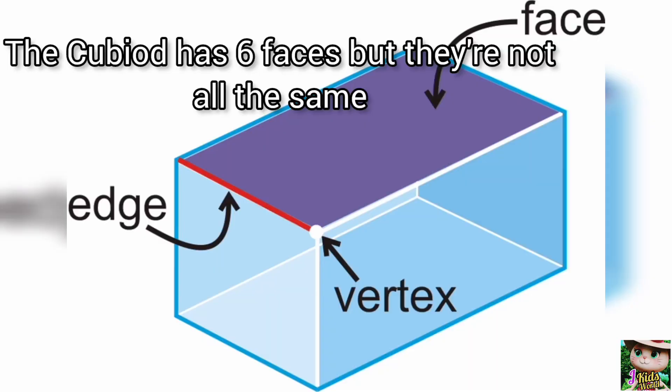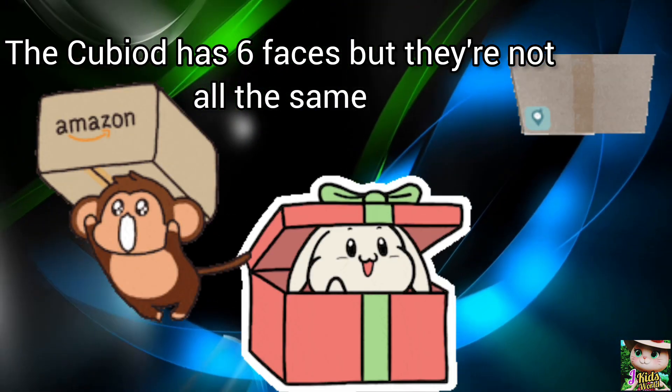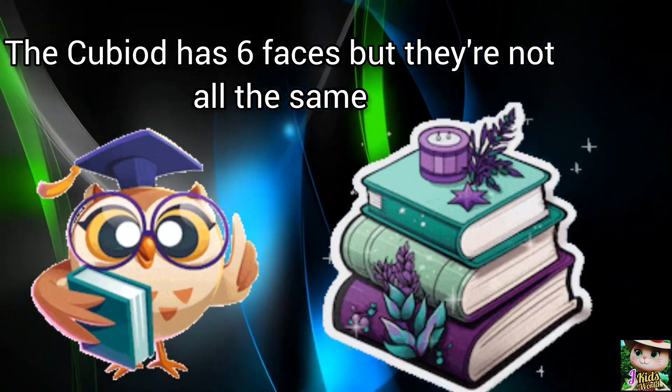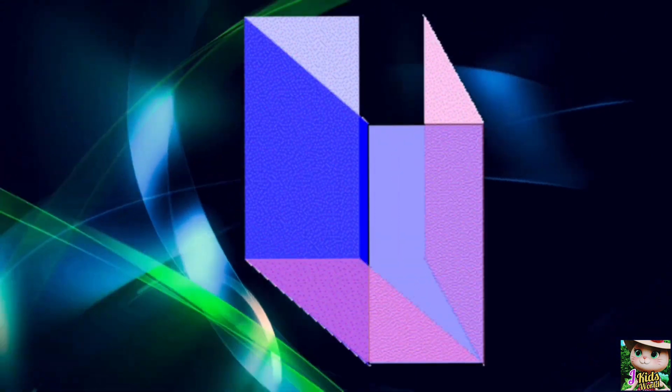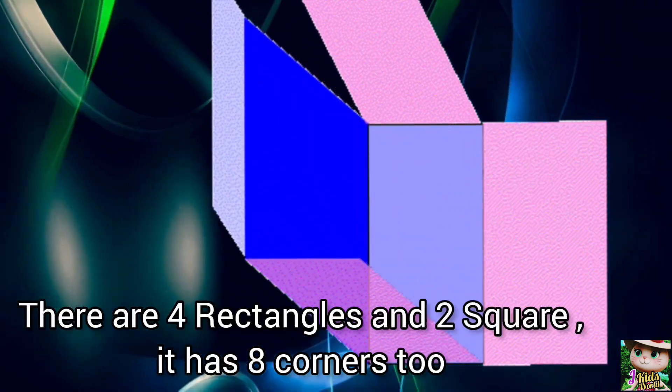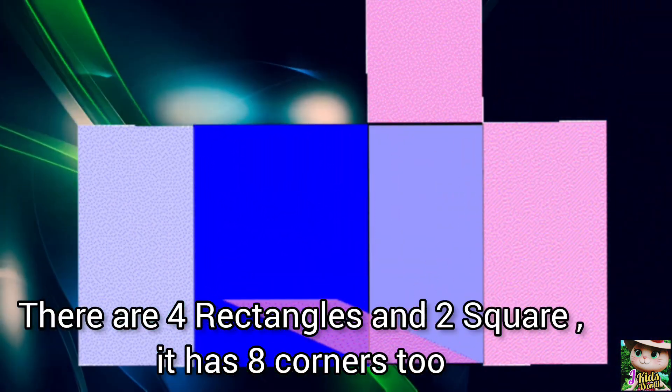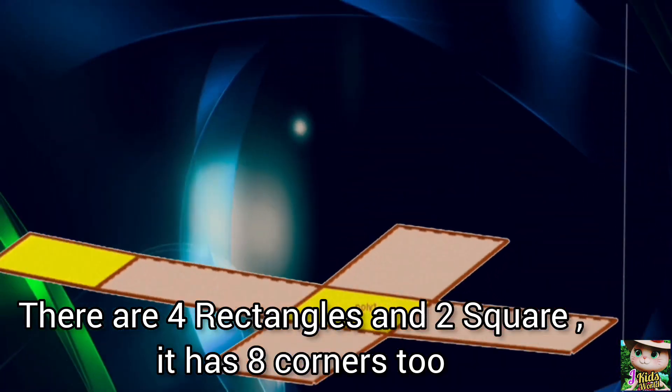The cuboid has 6 faces, but they are not all the same. There are 4 rectangles and 2 squares, and it has 8 corners too.